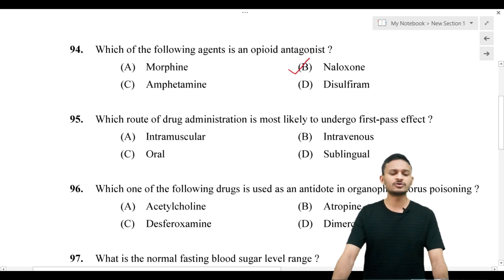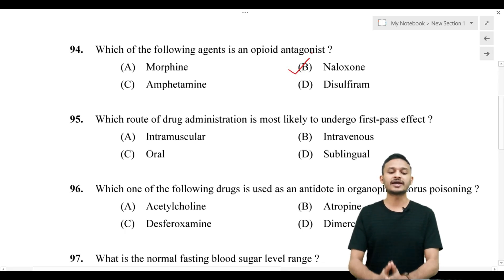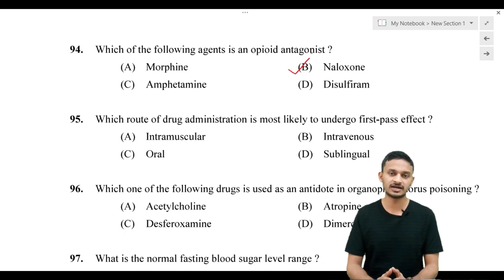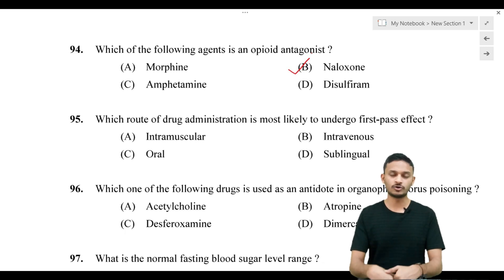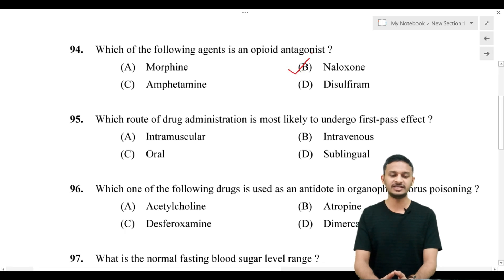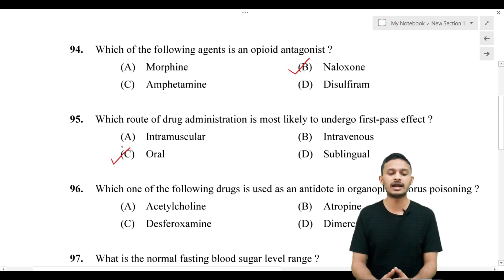Question 95: which route of drug administration is most likely to undergo first pass effect? Option A intramuscular, option B intravenous, option C oral, option D sublingual. The correct answer is oral. The oral route is the one most associated with first pass metabolism.